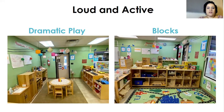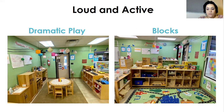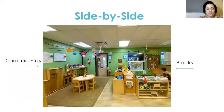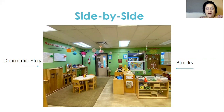Here are some examples of what a loud and active area looks like — we have dramatic play and blocks. These allow for multiple children to move in and out. There are larger spaces which allow for more children, which means more noise. What do we want to do with these loud and active centers? We want to place them side by side as much as possible. These are usually our most inviting and most popular areas, so more children are going to want to be there, and we should arrange it to allow children to fit in these spaces with ample room.